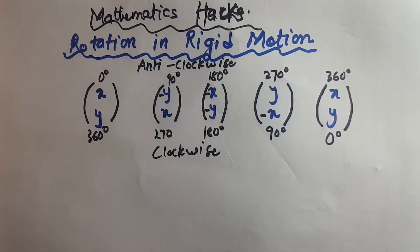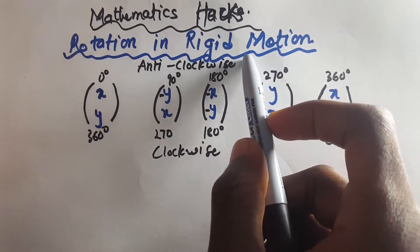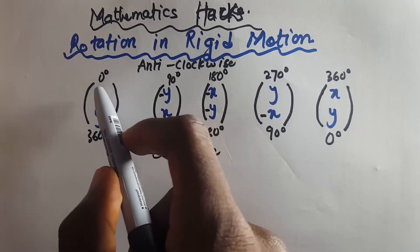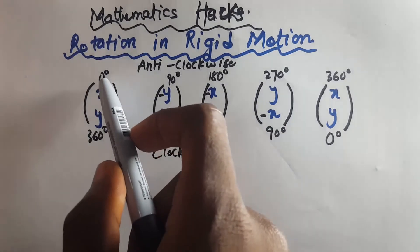So once you're able to write this, you are done. This is what you need. When you are told to rotate zero degrees anti-clockwise or 360 degrees clockwise, the answer is (x, y).